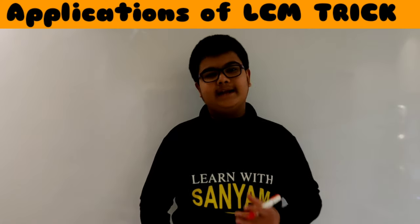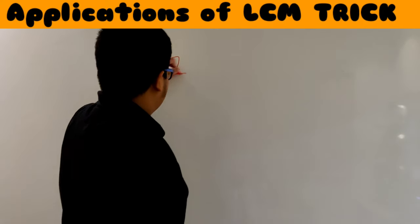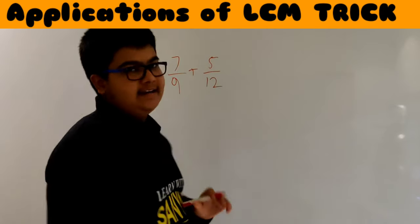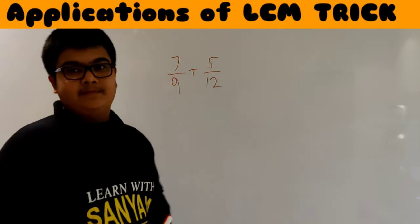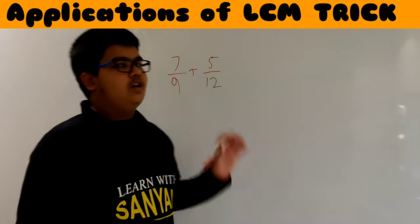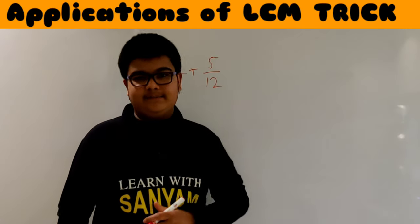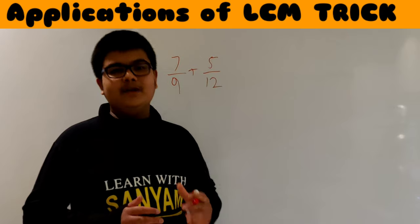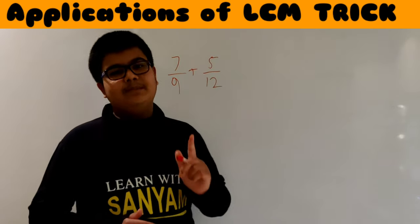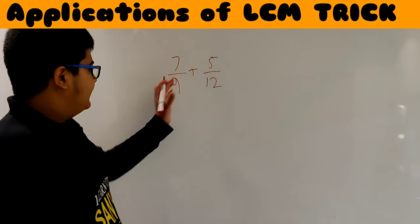Now let's see the applications of this trick. This trick is highly useful in finding the addition or subtraction of fractions. For example, if I have two fractions — 7/9 and 5/12 — and I have to find their sum, the first step is to find the LCM of the denominators. Now that we know this trick, we can easily find the LCM of the denominators, reducing one step in the process.